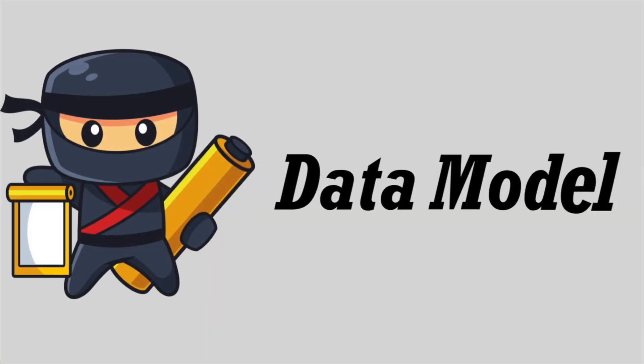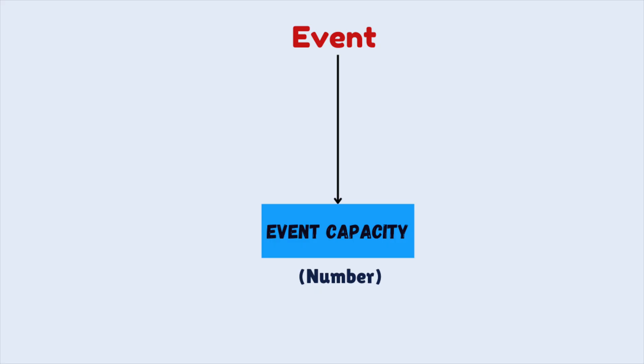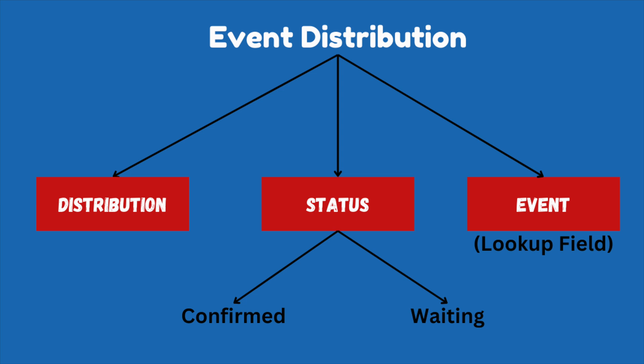As we always do, let's first understand the data model. In this scenario, we are going to use two objects: Event and Event Distribution. On the Event object, we have a field Event Capacity, which is of number type. Similarly, on the Event Distribution object, we have another field called Distribution, which is also of number type. On the same object, we have a field Status, which is of picklist type, containing values Confirmed and Waiting. Also, this Event Distribution object is in a lookup relationship with Event.